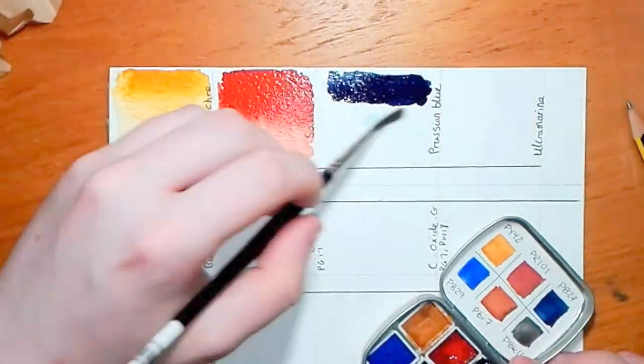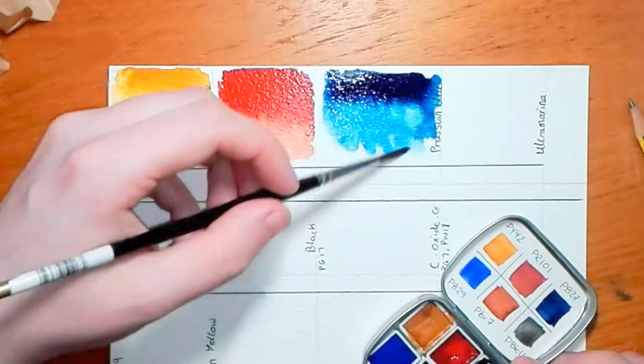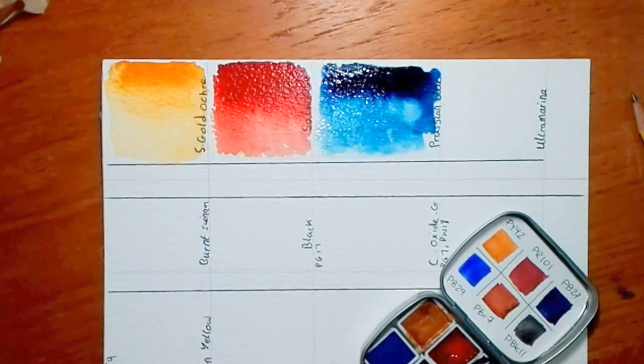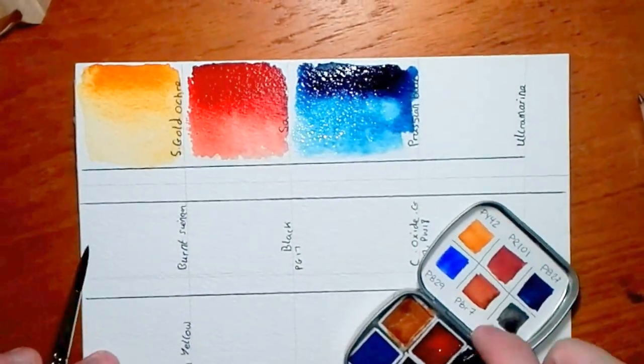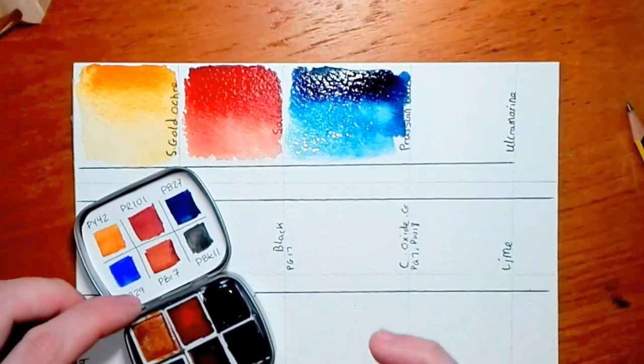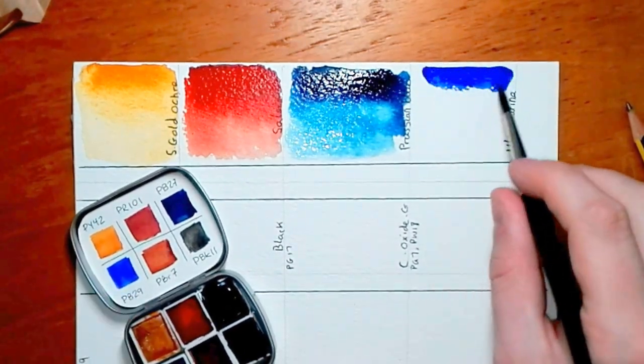The next color is Prussian blue and I have to say it's a very nice Prussian blue. It wets and flows very well and it's not as dark as some Prussian blues I've used. I did quite enjoy that. It wasn't as dark as others. It was more fun to use.